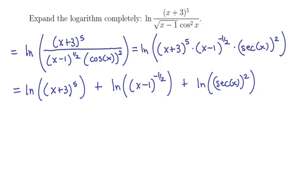Now that it's written like this, notice each term has a power. My third rule of logarithms says powers can be yanked out. The first expression becomes 5 times ln of (x plus 3) by pulling the 5 out.